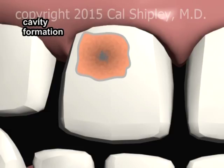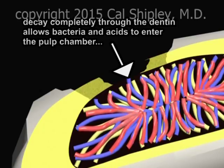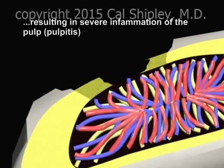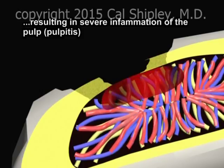Once the dentin layer has been destroyed, the pulp chamber is exposed, allowing bacteria and acids to access the pulp. If the cavity is left untreated, the bacteria and acids cause severe inflammation of the pulp, known as pulpitis.